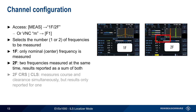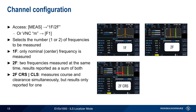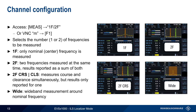It's also possible to perform a dual frequency measurement where results are reported either for course or for clearance. Additionally, there is a wide mode that measures over a wider bandwidth, which can be used to look at both single or dual frequency localizer signals.